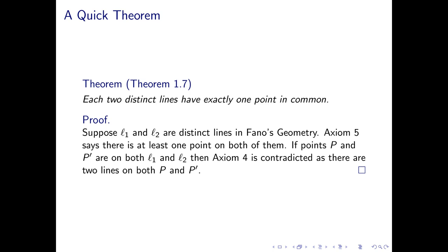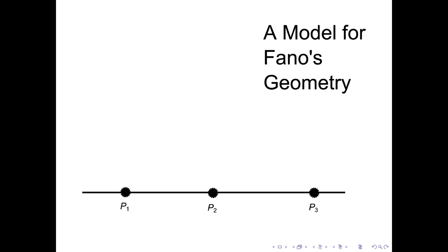Now that we have this result in hand, we're going to try to build ourselves a model. The very first axiom said there exists at least one line, and axiom 2 said each line has exactly three points. So if we already have one line, we have three points on it. The third axiom says not all points are on the same line, so apart from these three points, there must be another one — a point P4.